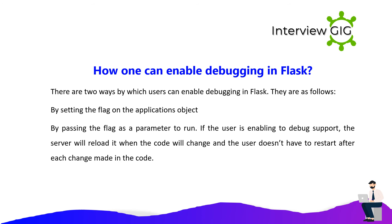How can one enable debugging in Flask? There are two ways users can enable debugging in Flask: by setting the debug flag on the application object, or by passing the flag as a parameter to run(). If debug support is enabled, the server will reload when the code changes and the user doesn't have to restart after each change made in the code.